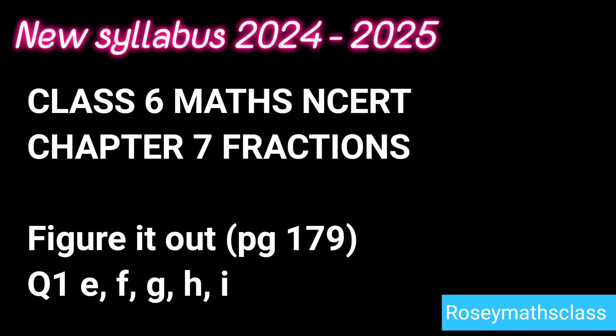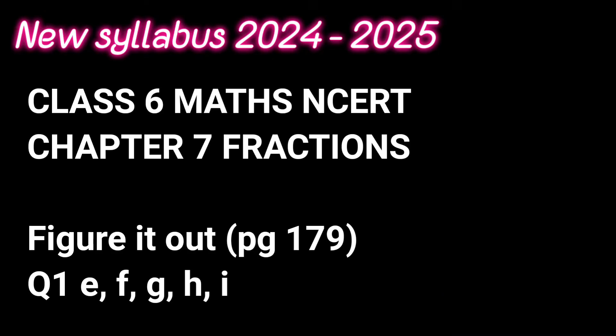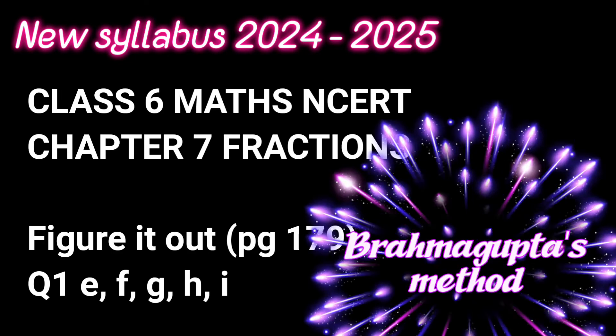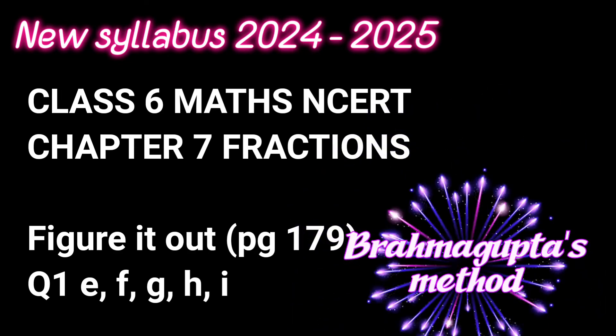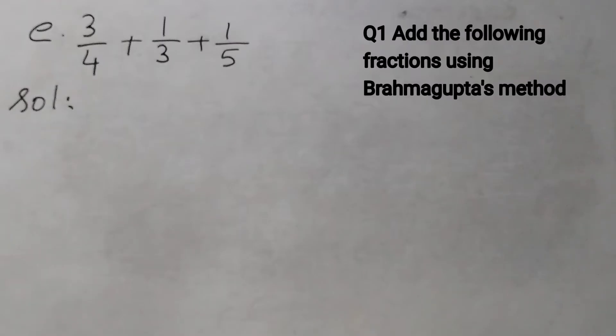Hello students, welcome back to Rosie Maths class. In our previous video, we completed question number 1, A, B, C and D. Today we are going to start from E onwards. So the question is: add the following fractions using Brahmagupta's method.